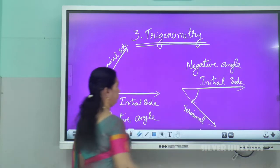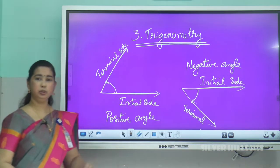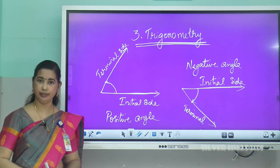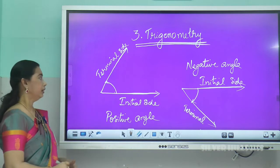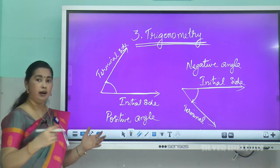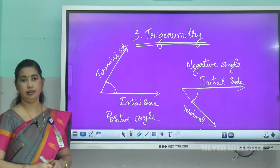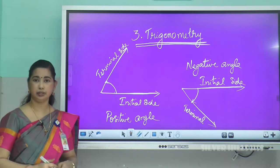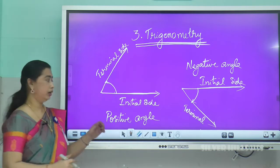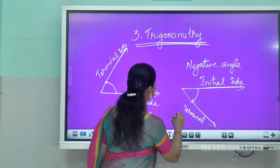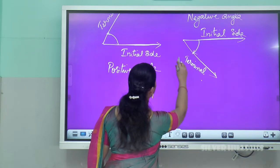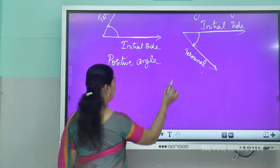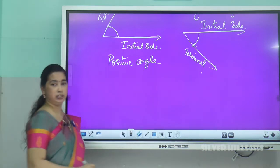So there are two types of angle: positive angle and negative angle. Now, how do we measure angles? There are two units of measurement for angles.